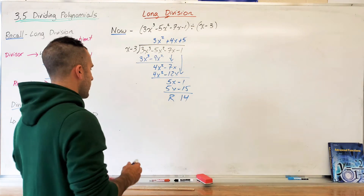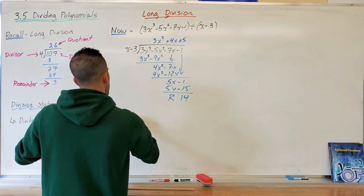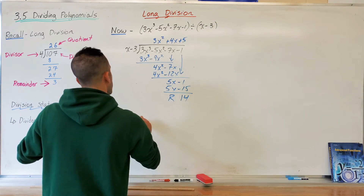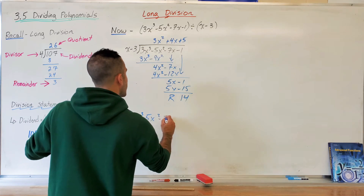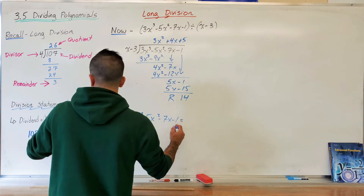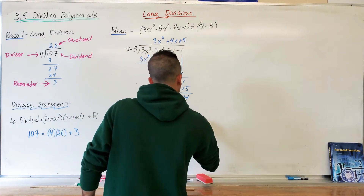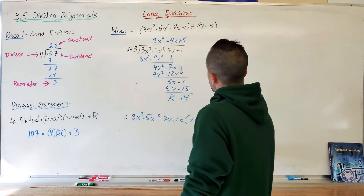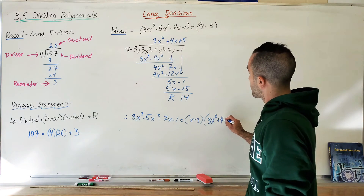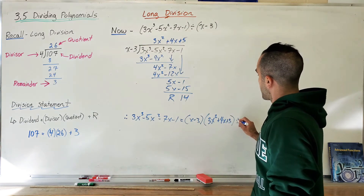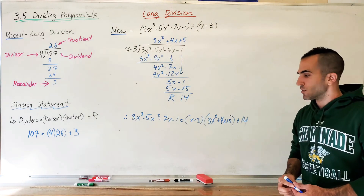Now I create my division statement. Therefore, the dividend 3x³ minus 5x² minus 7x minus 1 equals the divisor (x minus 3) times the quotient (3x² plus 4x plus 5), plus the remainder 14. That's a complete therefore statement.